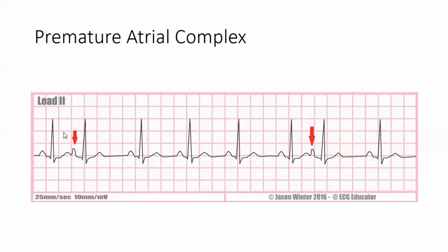Let's look at this. You can see that this is not a regular rhythm — there are irregularities in it. From here to here and here to here, this looks about the same, but these other intervals are definitely different. So we have an irregular rhythm.